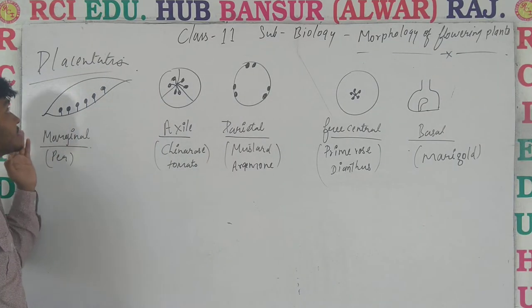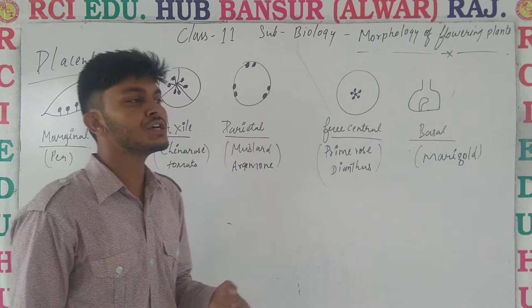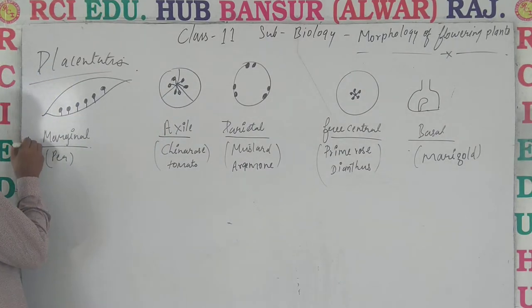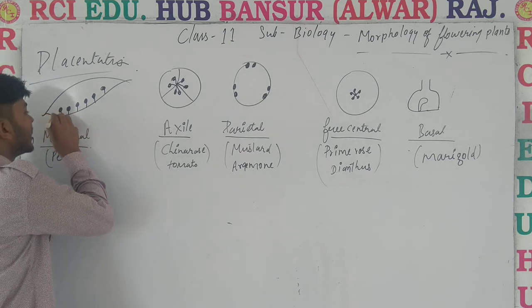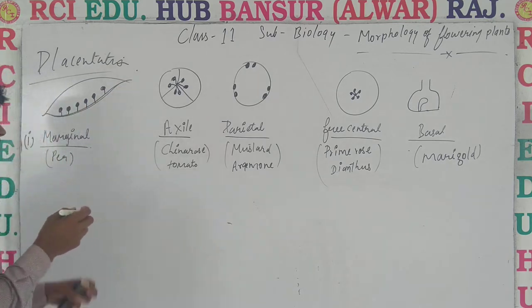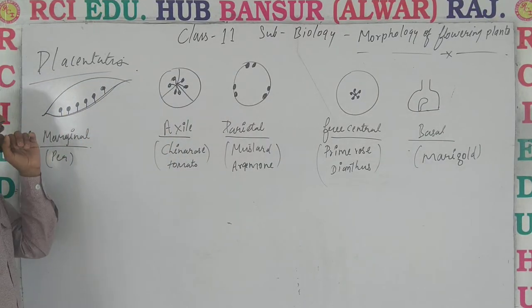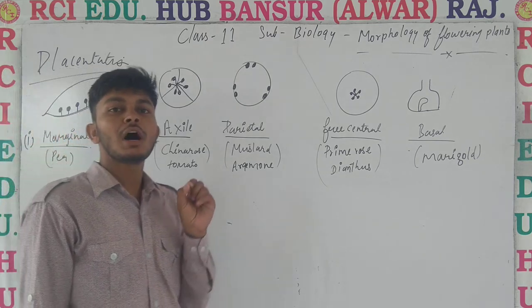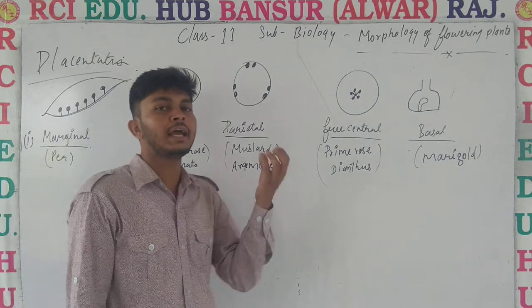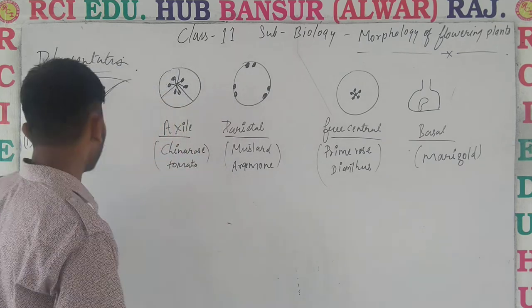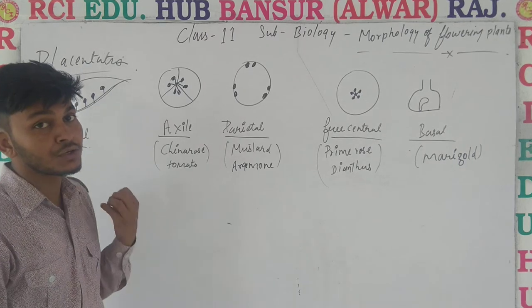First of all, we'll talk about marginal placentation. Marginal placentation के अंदर जो ovules होते हैं, वो margin के उपर पाई जाते हैं — the ovary in which the ovules are arranged at the margin of the ovary. That arrangement is known as marginal placentation, and the example is pea (P). You can easily observe this arrangement in pea.